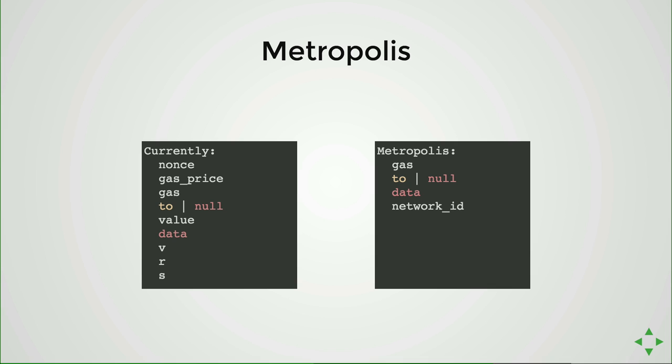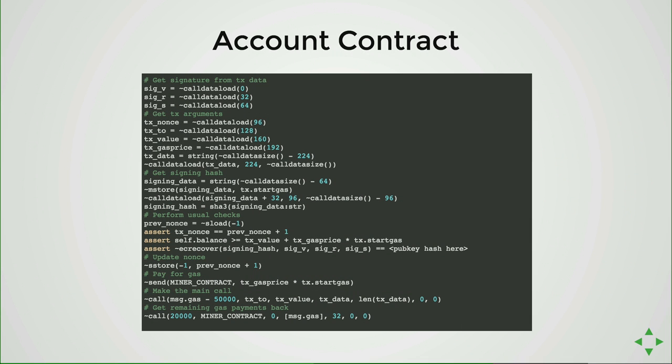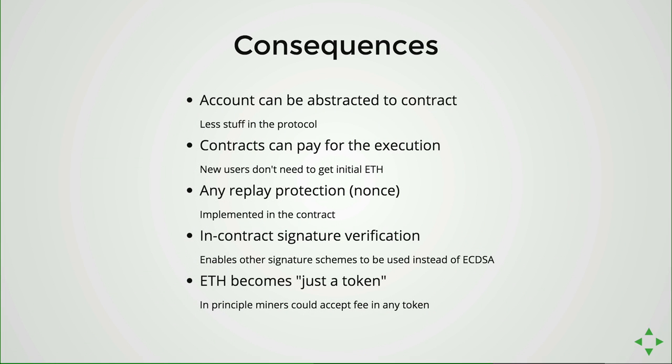The idea is that instead of encoding all those things in the protocol itself, we can put it on the blockchain. Instead of using just ECDSA for signatures, we can implement any signature scheme on the blockchain in a contract. The contract can verify the signature and actually pay for its execution. The consequences of these changes in Metropolis: accounts can be abstracted to contracts, contracts will be able to pay for themselves, and transactions will be like those zero-gas-price transactions I mentioned earlier.